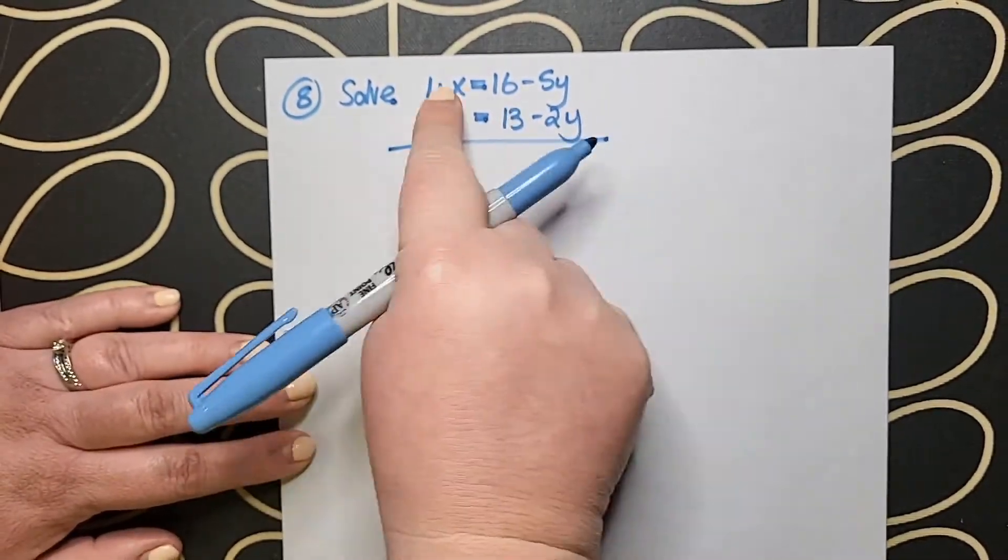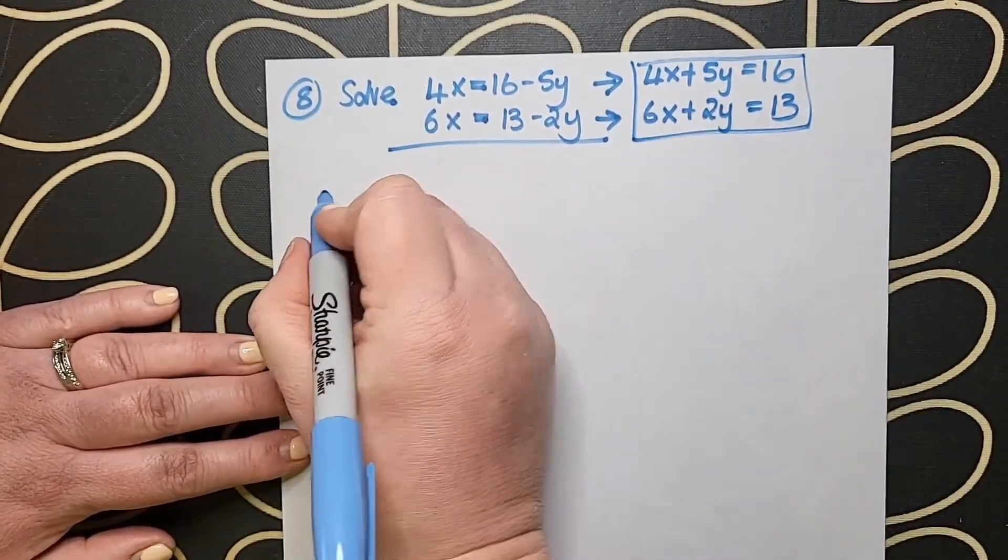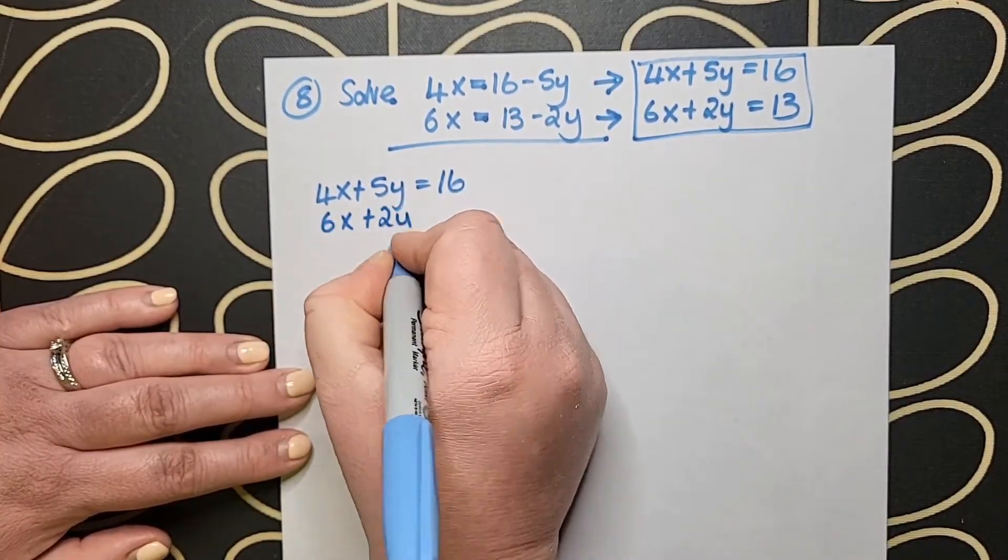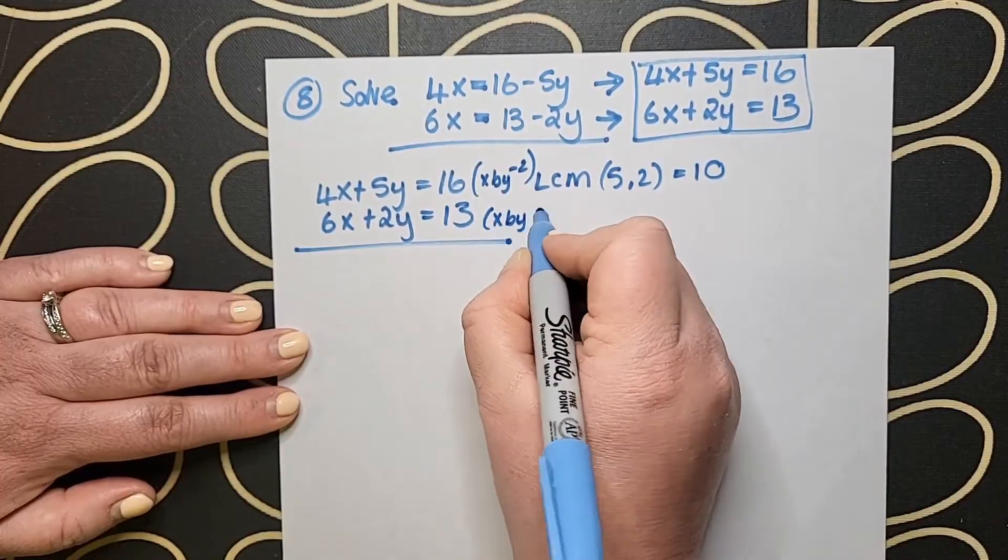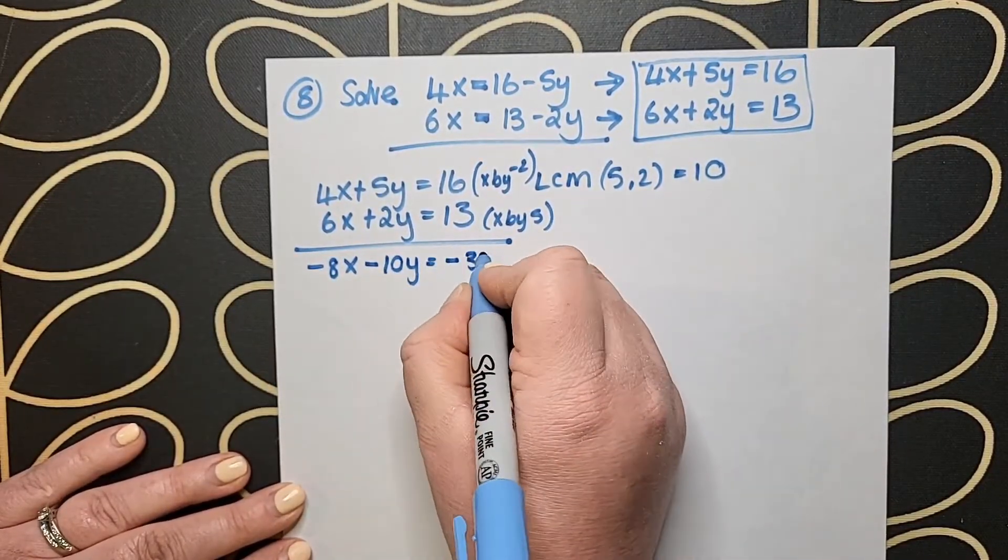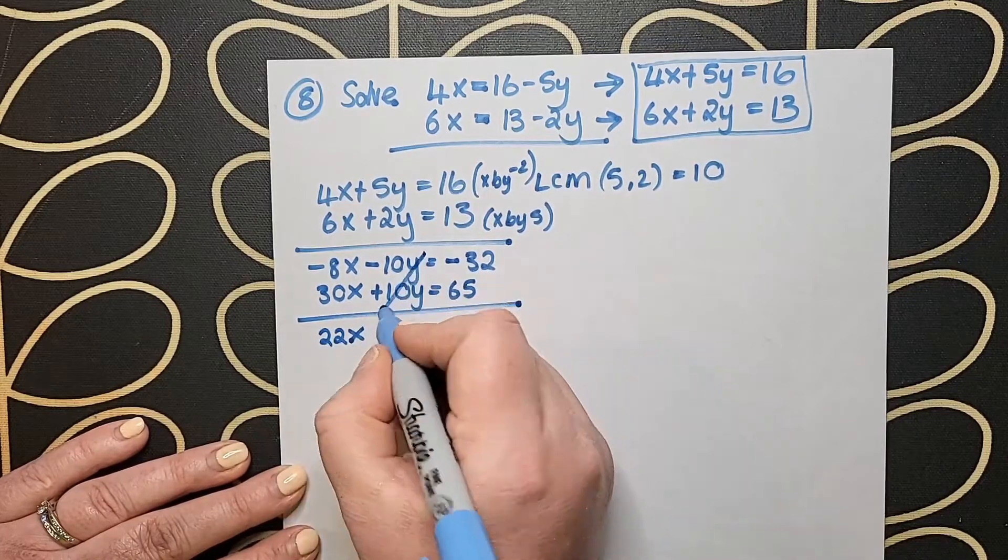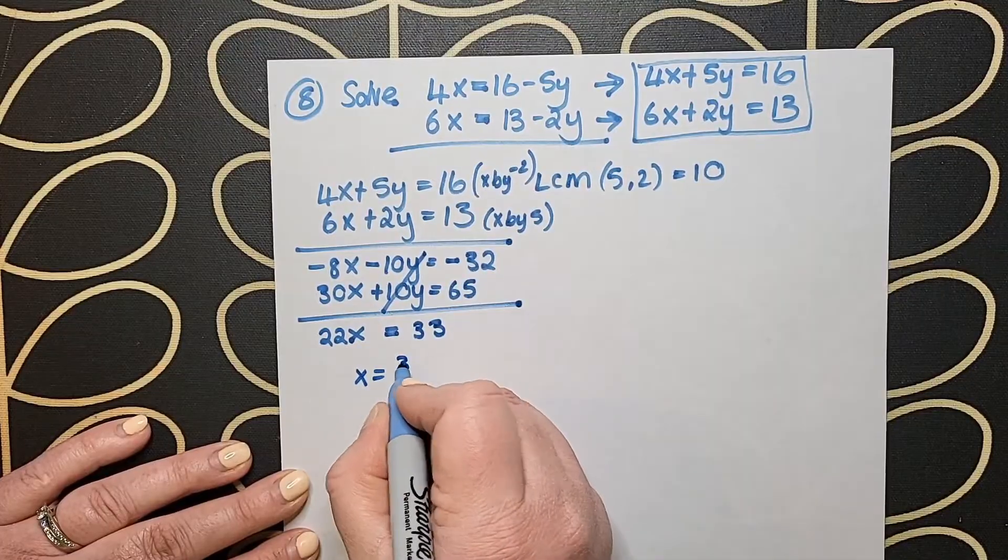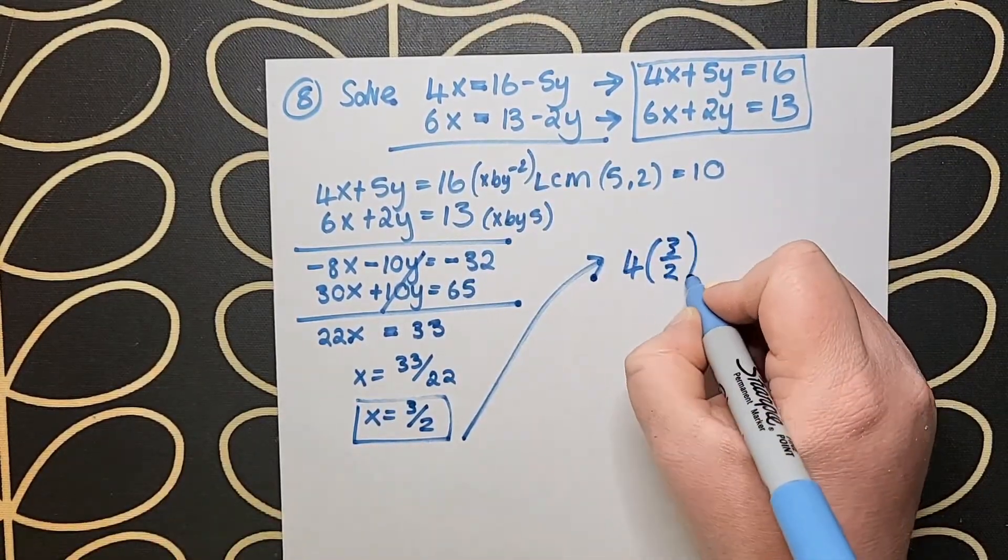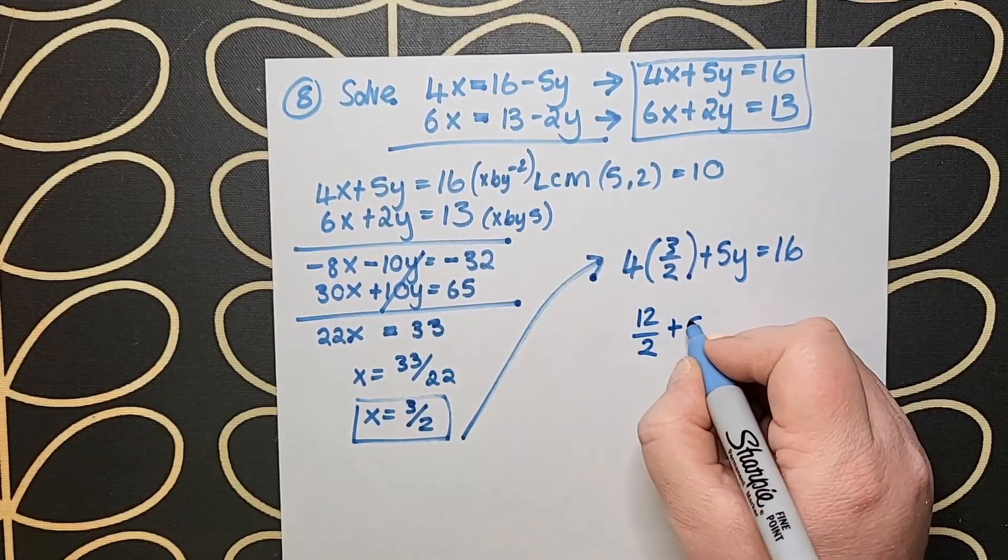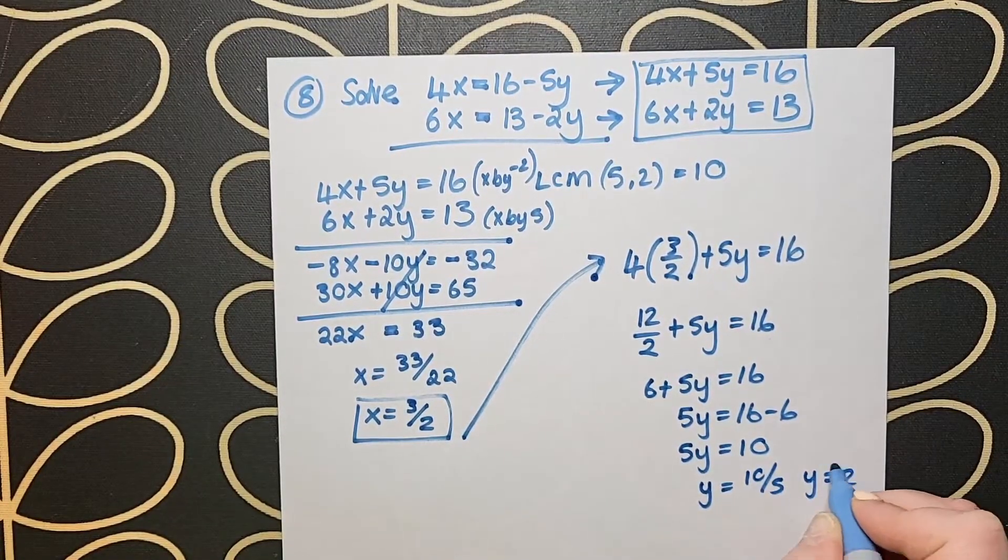Moving on to question 8, we don't have fractions, but both given equations are in the wrong form. Over on the right hand side, I'm rearranging where the x is first, then the y, then equals the constant number. Once I do that, I have a look. There's a bit of work here where I have to do something with both lines. I look at my y's and see 5 and 2. The LCM of 5 and 2 is 10. I make a choice that I want minus 10 and plus 10y. I multiply the top line by minus 2 and the bottom line by plus 5. I get minus 10y plus 10y. When I add the lines together, I get 22x equals 33, which means the y's cancelled out. I get x equals 3 over 2, and when I sub that back in, I find that y is equal to 2.